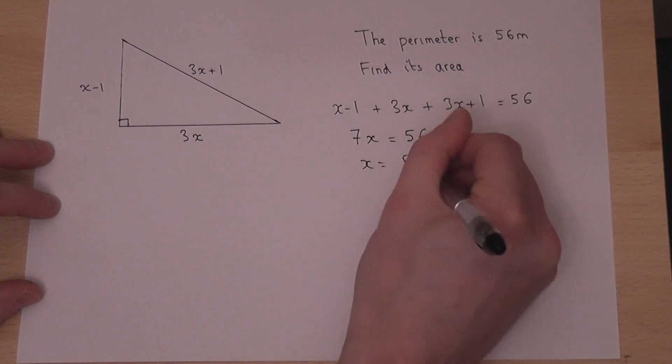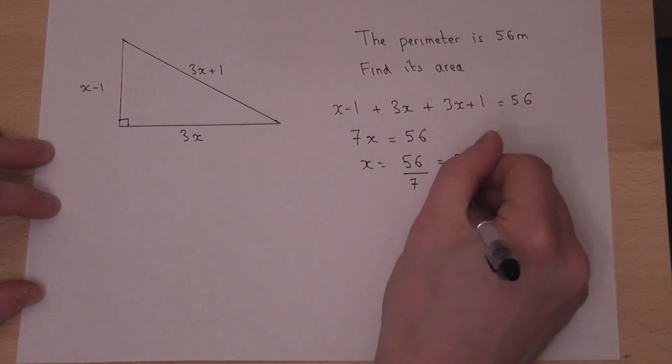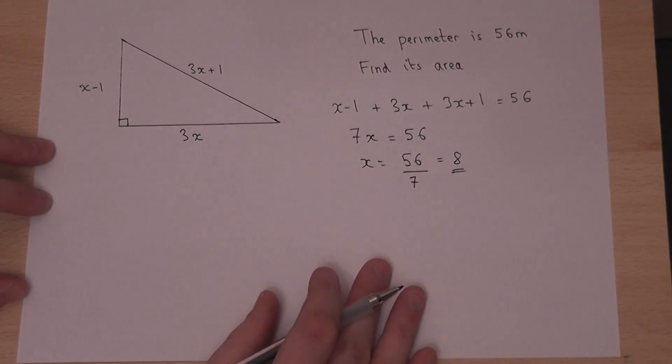So x just equals 56 divided by 7, which is 8. So we know the value of x.